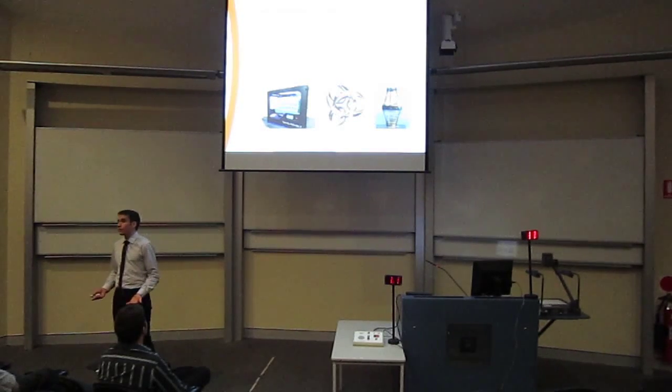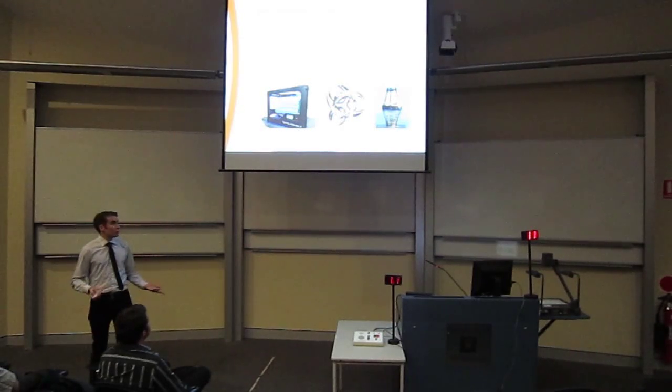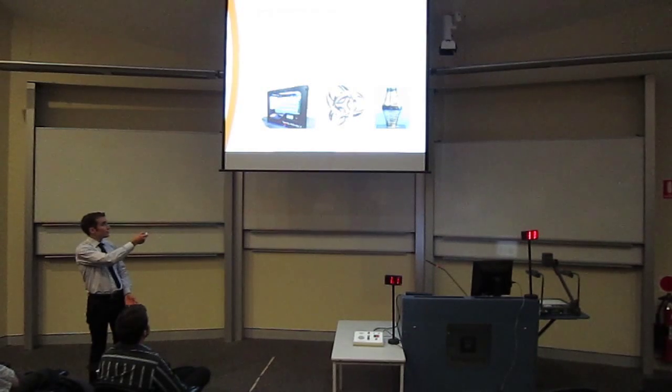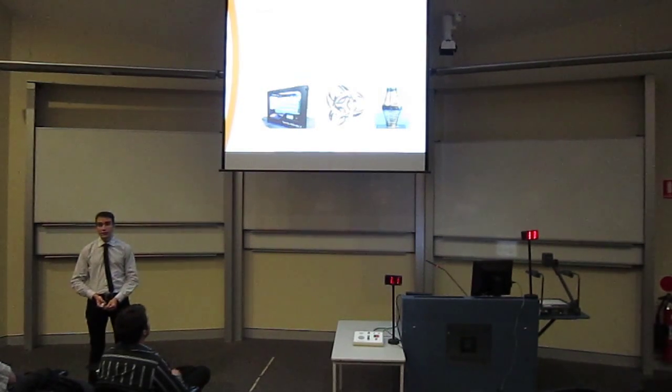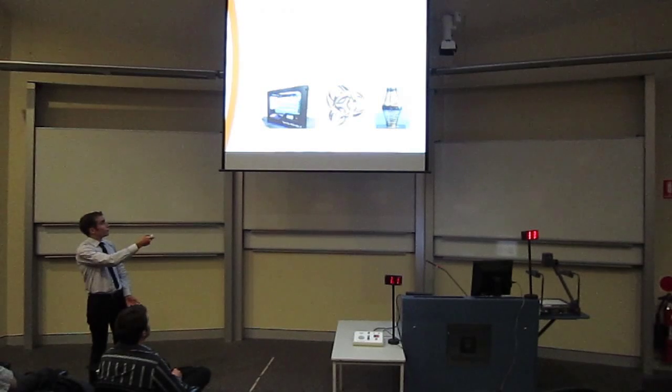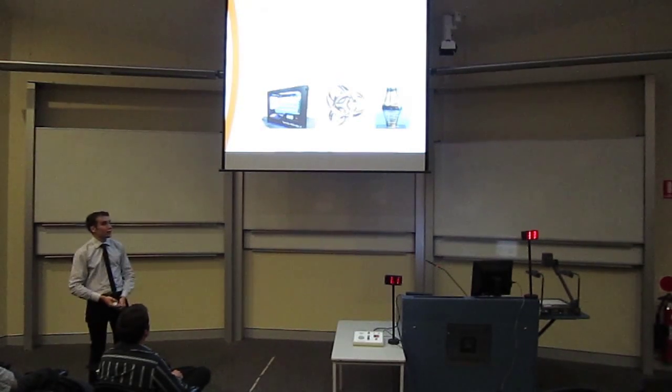There are several processes which implement additive manufacturing. Perhaps the most common is fused deposition modeling, which is shown here, which is used by your standard plastic 3D printer. Other processes include selective laser sintering or electron beam freeform fabrication.